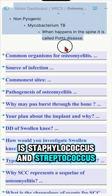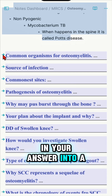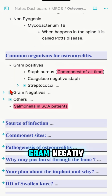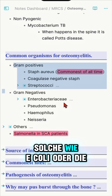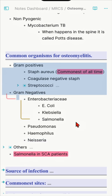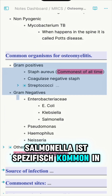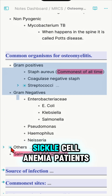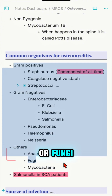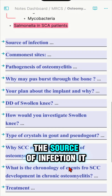You can classify organisms in your answer into gram-positive, which includes Staph and Strept, and gram-negative such as E. coli, Enterobacteriaceae, Klebsiella, and Salmonella. Salmonella is specifically common in sickle cell anemia patients. Other organisms include anaerobes, fungi, and Mycobacterium.